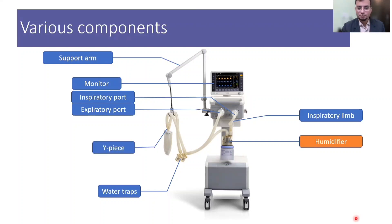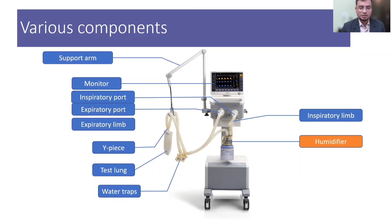The gases are delivered to the patient through a Y-piece connector, and then through an airway device the gases are delivered to the patient's lung. When we want to check the ventilator functioning before connecting to an actual patient, we can connect it to the test lung. From the patient, gases go back to the ventilator through the expiratory limb and then through the expiratory port.